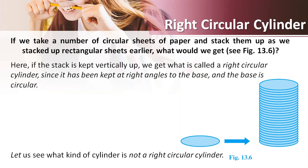So here we need to understand why we are calling it a right circular cylinder. Because a cylinder whose base is a circle is called a circular cylinder. If the axis of the cylinder is perpendicular to its base then the cylinder is called a right circular cylinder, like what is shown in figure 13.6. Now let us see what kind of cylinders are not a right circular cylinder.